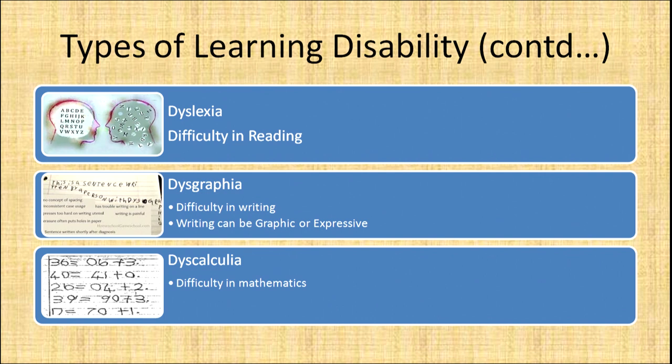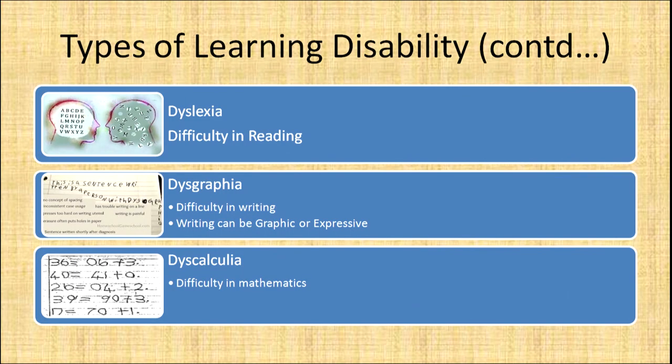Now the types of learning disability. Depending upon the difficulty areas, learning disability can be categorized into five types. Learning disability is an umbrella term with dyslexia, dysgraphia, dyscalculia, dyspraxia, and non-verbal learning disability as its types. Dyslexia deals with difficulty in reading. Dysgraphia deals with difficulty in writing — and writing here means not only the graphic form but also the expressive one. Dyscalculia is related to difficulty in mathematics — solving problems, understanding concepts of time, length, breadth, and height.